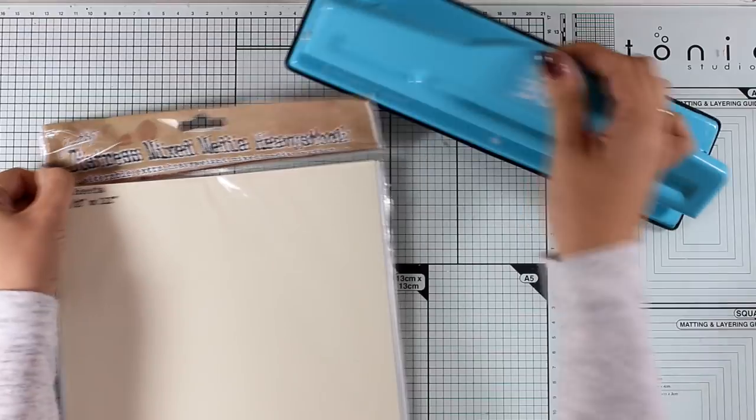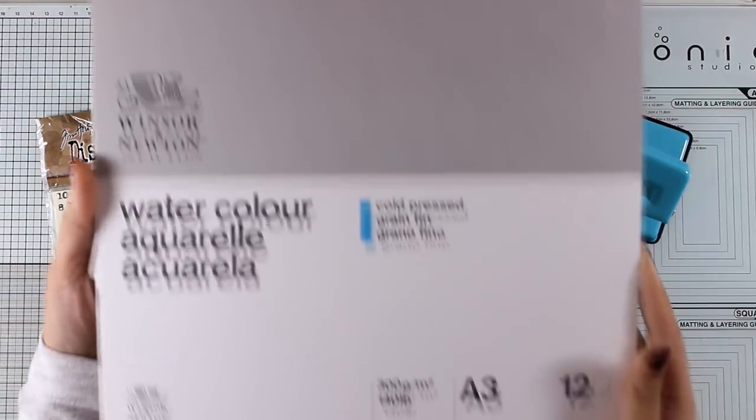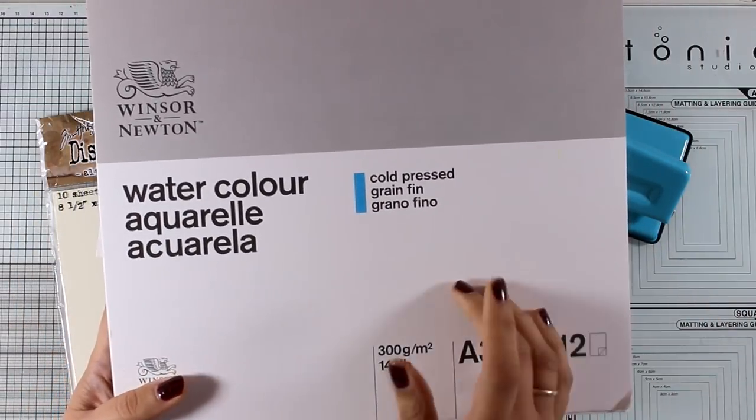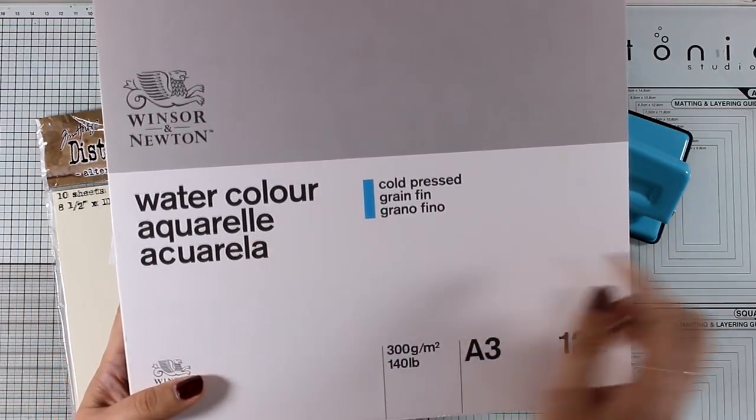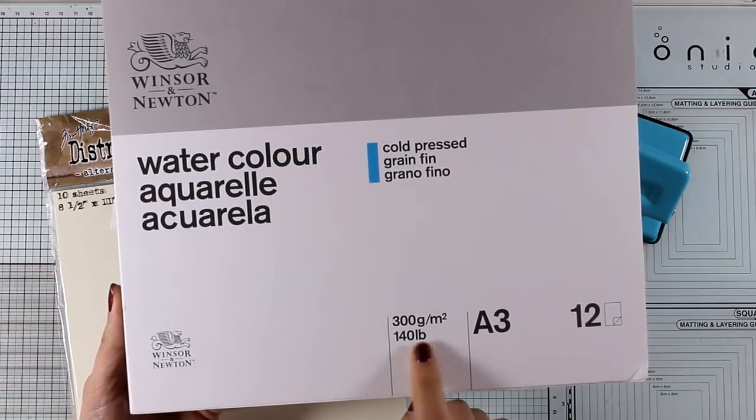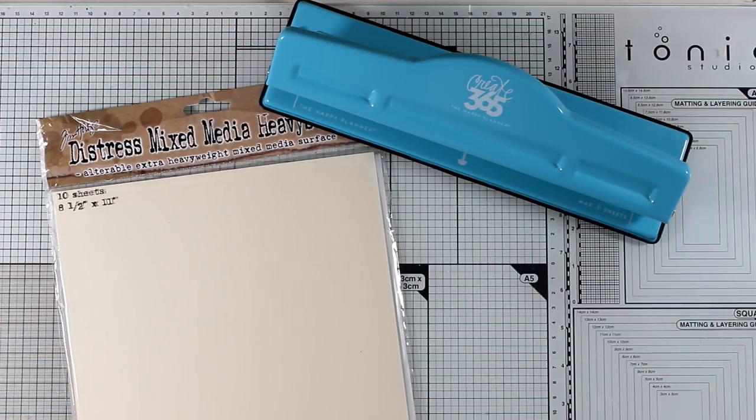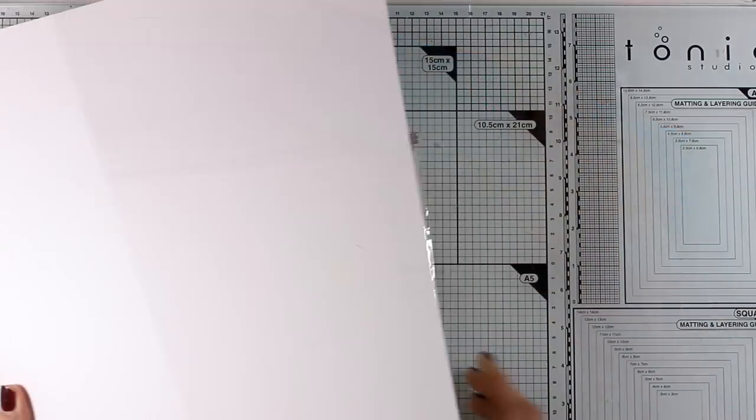For example, I know I would love to make an art journal that could use this mixed media paper by Ranger. And today I'm going to work with watercolor paper - this is by Winsor & Newton and it's their cold-pressed paper. It is 140 pounds, which means that it's quite heavy.